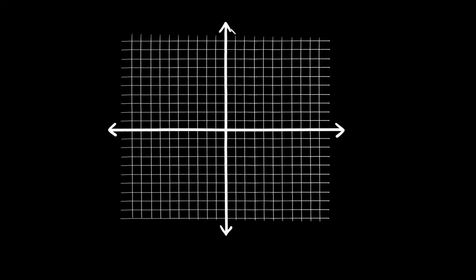So first of all let's break down what this thing is. As you can see I have two really big thick lines — these are called your axes. Each one has a specific name: this horizontal one is called your x-axis, and this vertical one is called your y-axis. What these axes represent are essentially number lines.